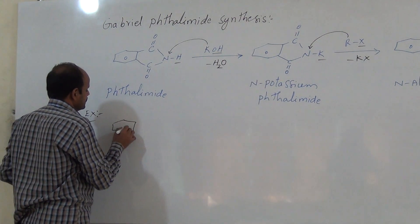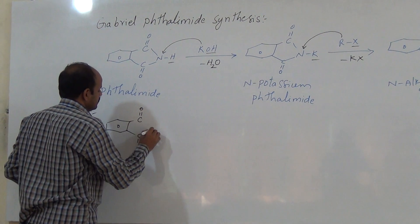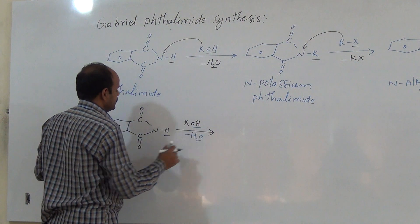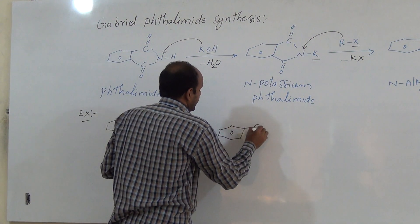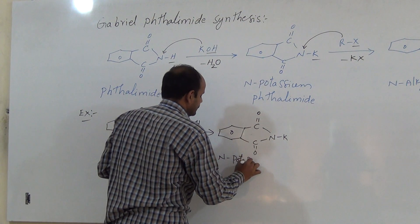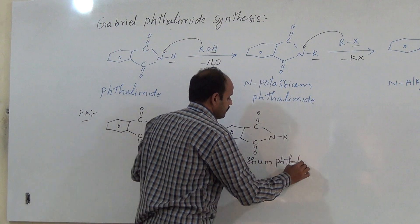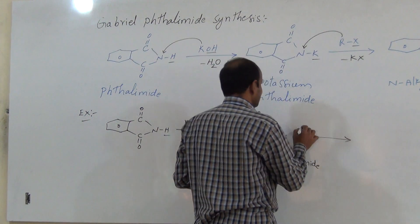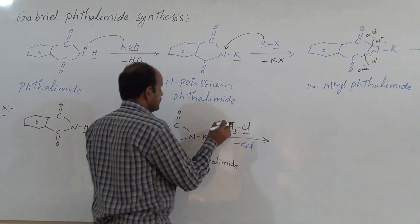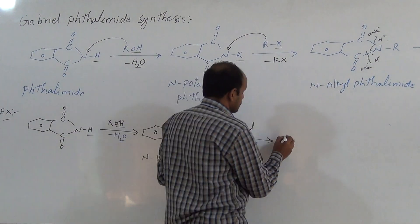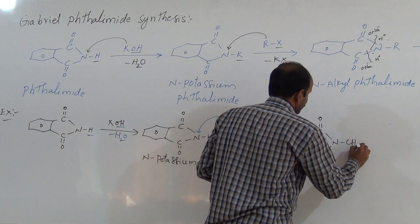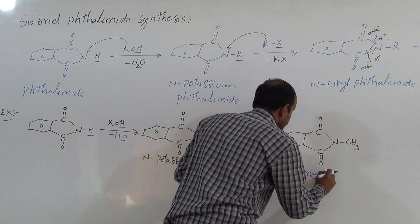For example: take phthalimide (C6H4(CO)(CO)NH). It reacts with KOH; H+ and OH- are removed as H2O, giving N-potassium phthalimide. This N-potassium phthalimide reacts with an alkyl halide like CH3Cl. K+ and Cl- are removed as KCl, and the CH3 group attacks on nitrogen, giving N-methyl phthalimide.